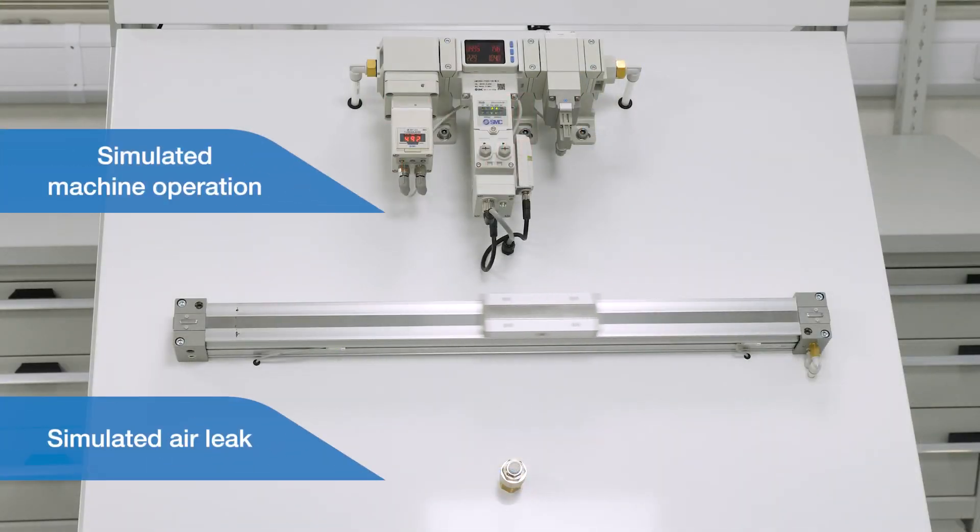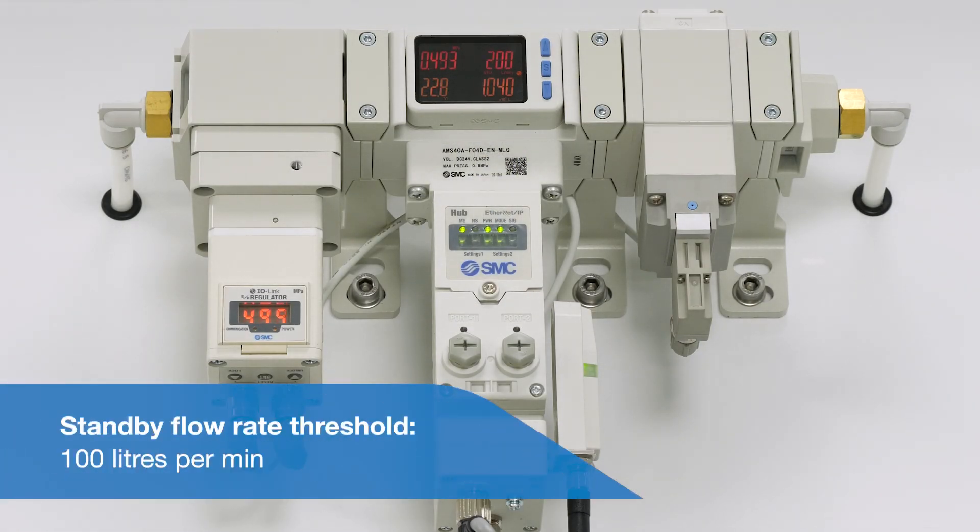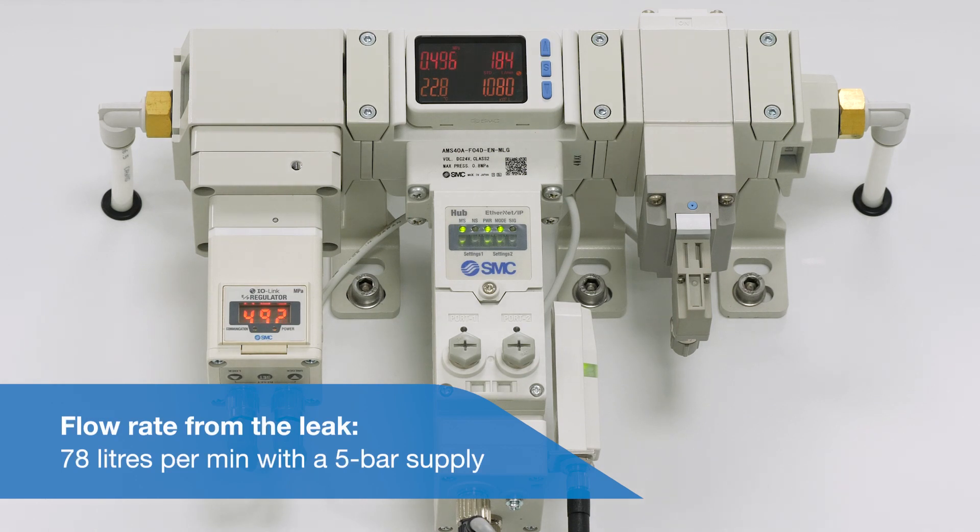Here we've simulated a leak somewhere on the machine by the addition of a flow controller below the actuator. So the consumption here is the actuator movement and the continued air loss from the flow controller or leak. In this demonstration the standby flow rate threshold has been set to 100 litres per minute so if the flow drops below 100 litres a minute the machine is considered idle and only the leakage flow is present. The flow from the leak is approximately 78 litres per minute with the 5 bar supply.